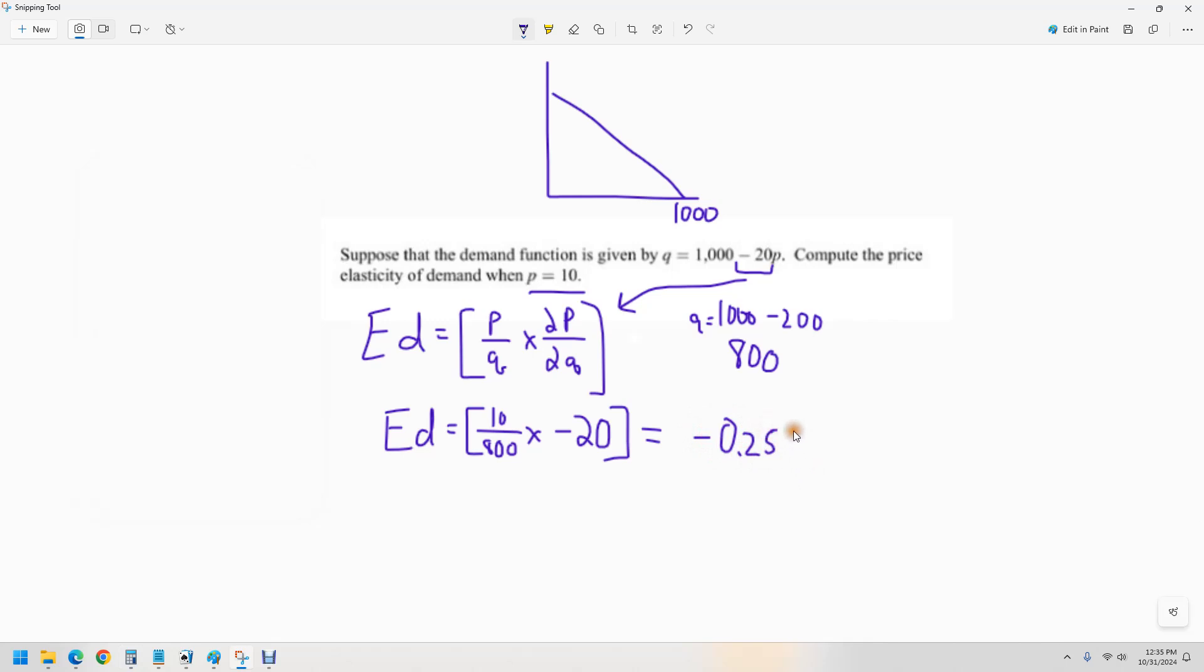This in a lot of classes is going to be reported in absolute terms. So you might hear instructors say that's just 0.25, or they might also call that one fourth because that ratio could be expressed as a fraction. And that, of course, is inelastic because it's a number in between zero and, depending on whether or not you're using absolute terms, one or negative one. So that's inelastic, and that is how to solve for point elasticity given a certain price.